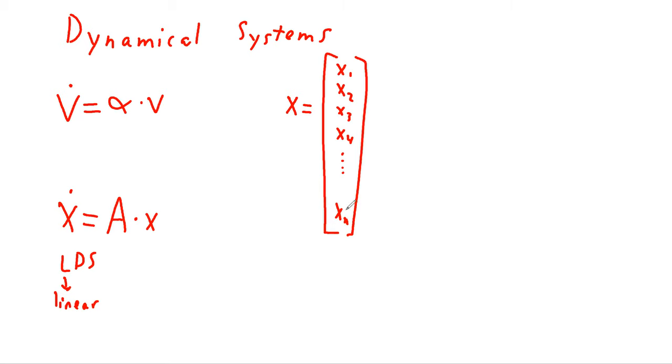So let's pretend that x represents the state of a car. And the various components, the various dimensions, are aspects that together comprise the total state of the car. So let's say x1 represents position,